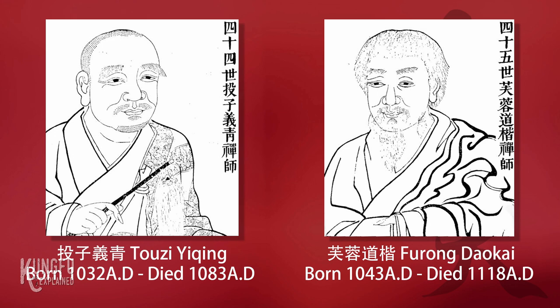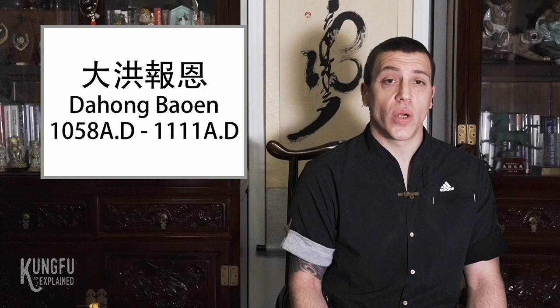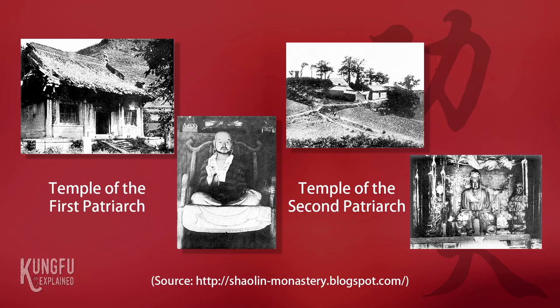Chan Buddhism was favored by the ruling class, and the Song Court supported and encouraged it. By the 11th century it was the dominant sect of Buddhism in China, with the Linji School being the most popular and the Cao Dong School second. It was from the late 11th century that the Shaolin Temple began to adopt the Cao Dong School of Chan Buddhism. The Cao Dong Chan masters Yi Qing and his inheritor Daokai were invited to teach at the monastery. Shi Bao'en, one of Yi Qing's disciples, joined the Shaolin Temple in 1089 for five years and further promoted the Cao Dong School there. During this period, the Shaolin Temple constructed two major temples within: the temple of the first patriarch commemorating Bodhidharma, and the temple of the second patriarch commemorating Hui Ke.